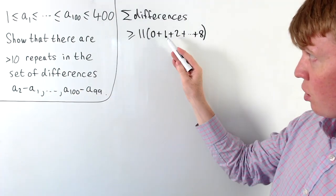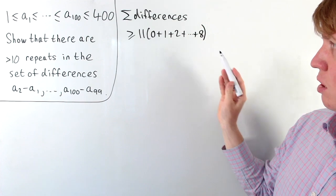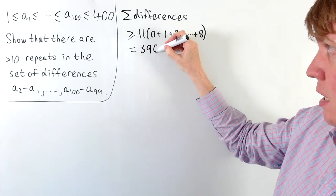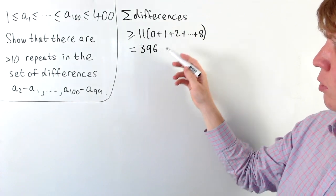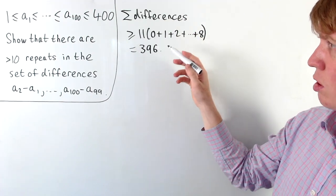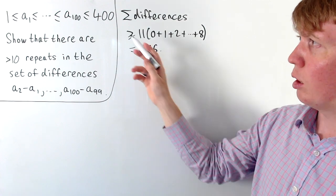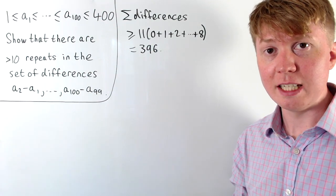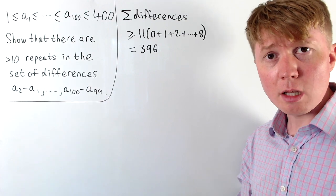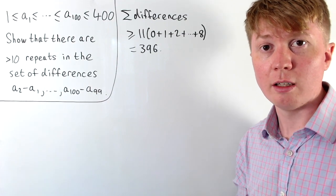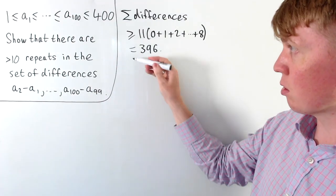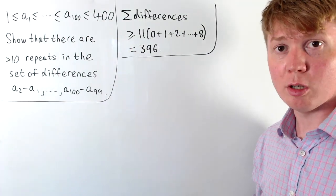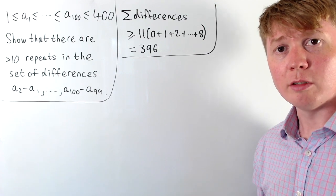The sum of integers from 1 to 8 is 36, and times 11 gives 396. So the sum of differences has to be at least 396, and our previous constraint was that it must be at most 399. There's no contradiction here, so we can't rule out at most 11 repeats from this argument alone.